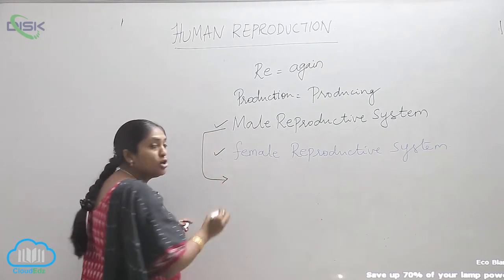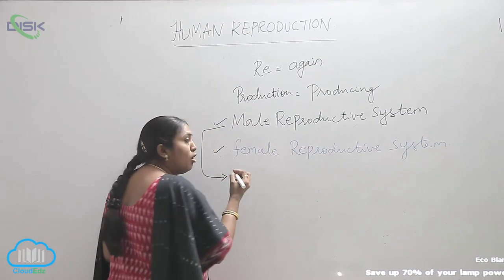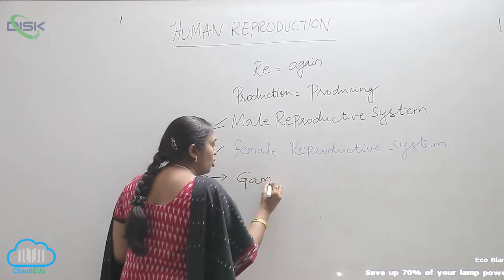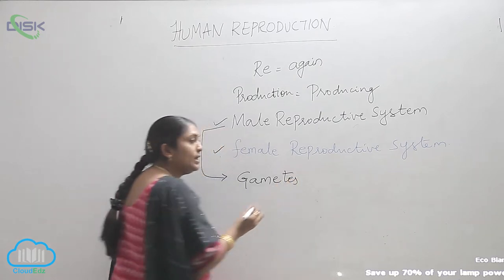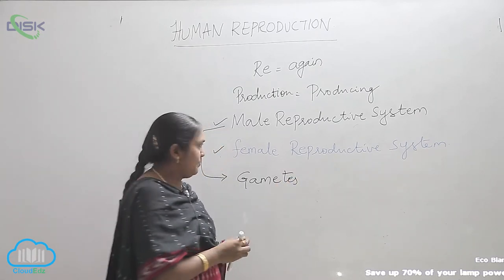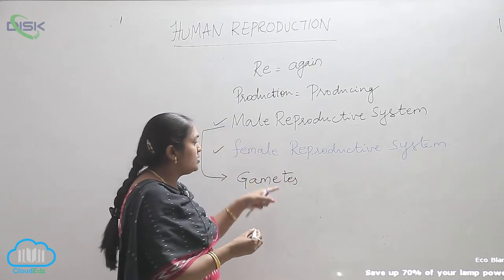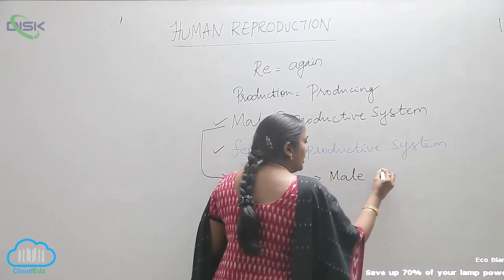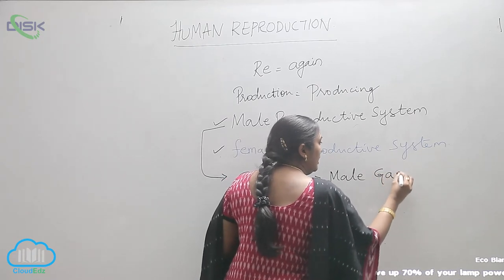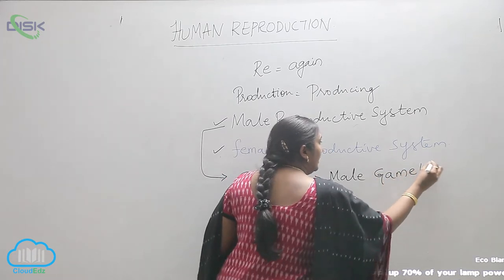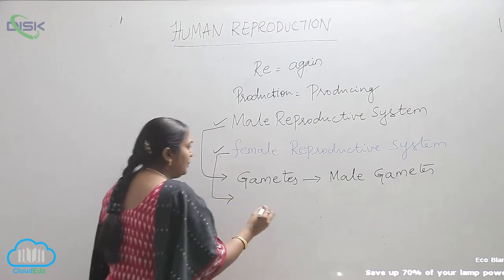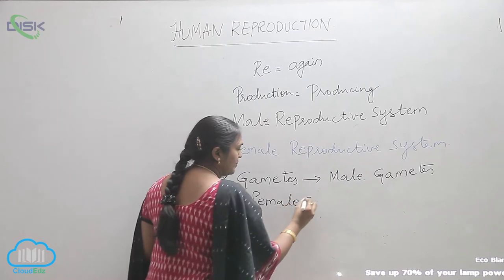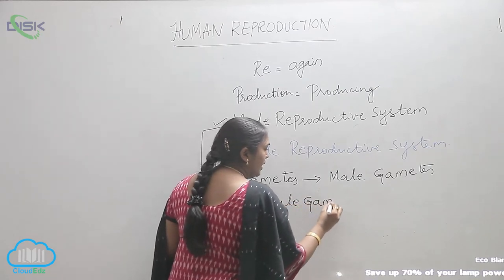The primary organs of reproduction involve gametes in the reproductive system. In the male reproductive system, the gametes are called male gametes, and in the female reproductive system, the gametes are called female gametes.